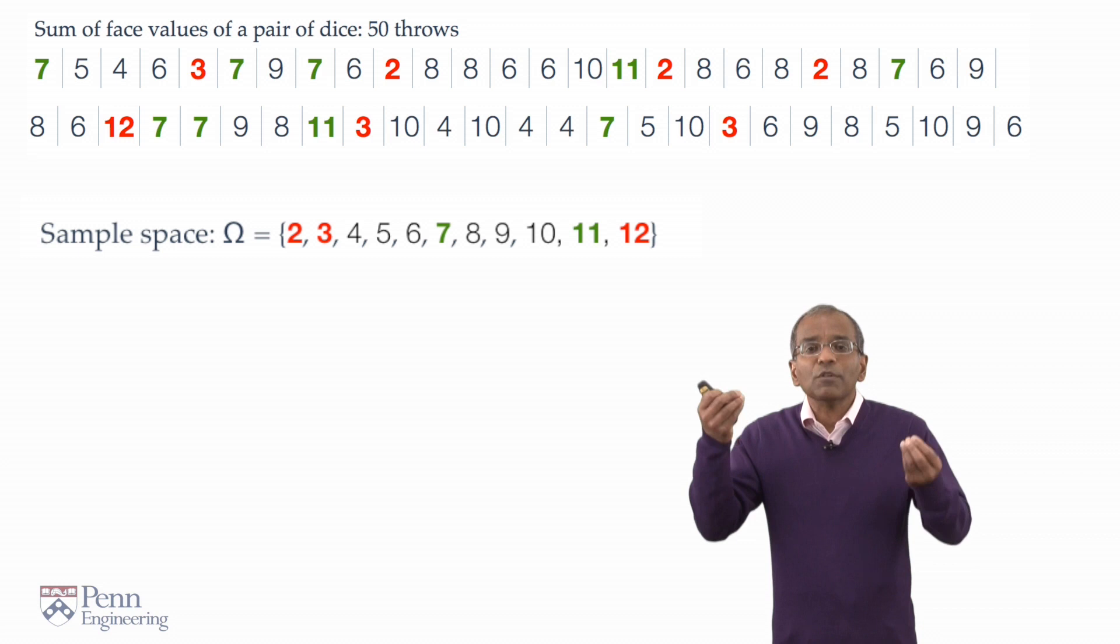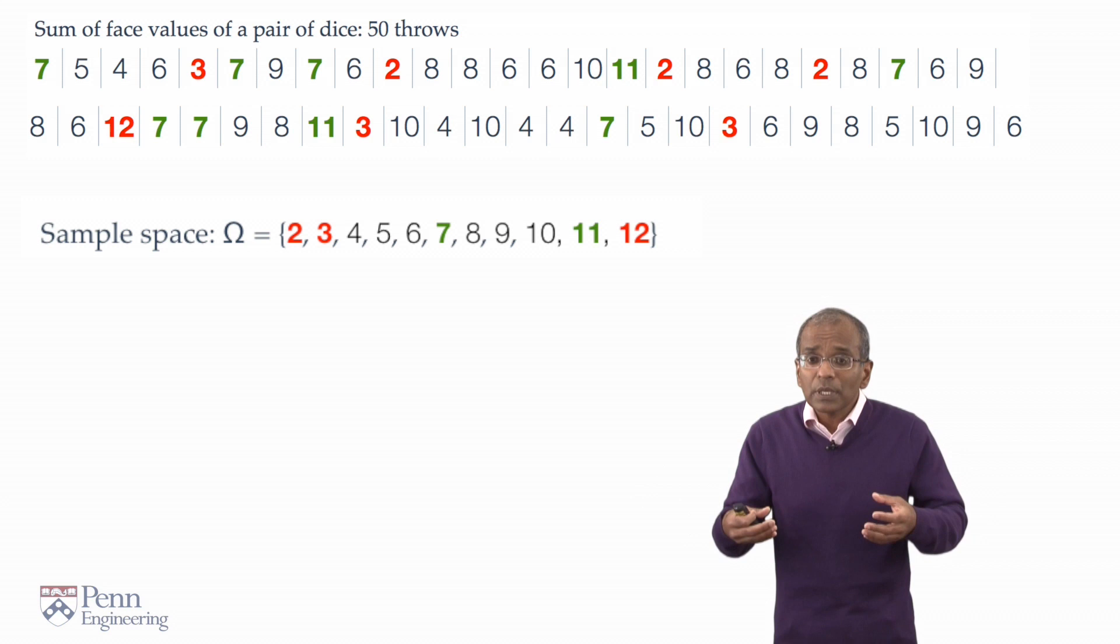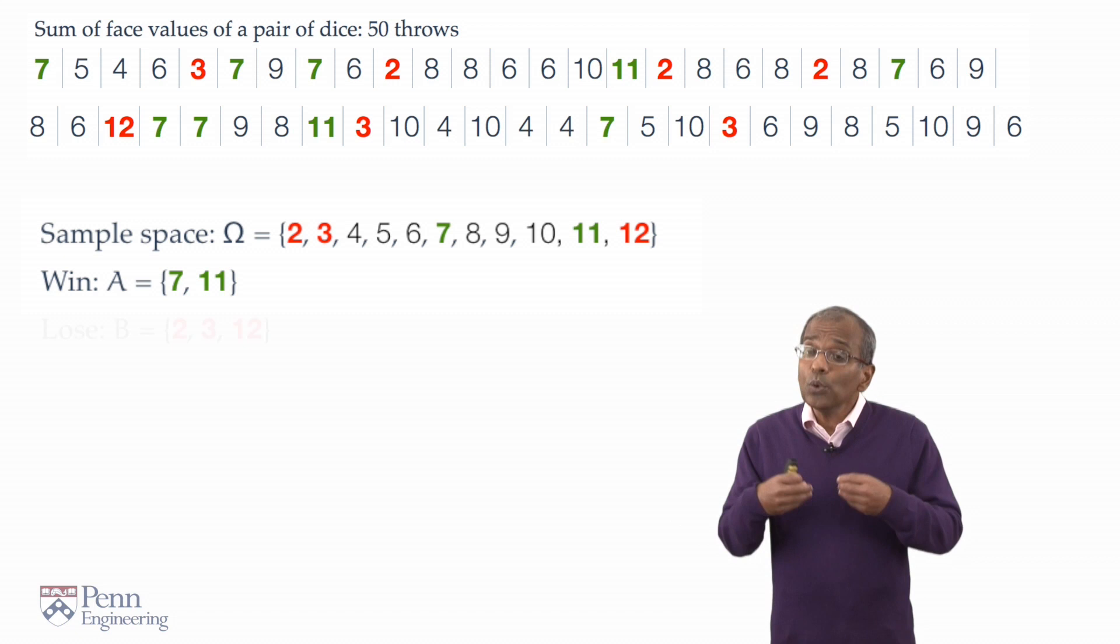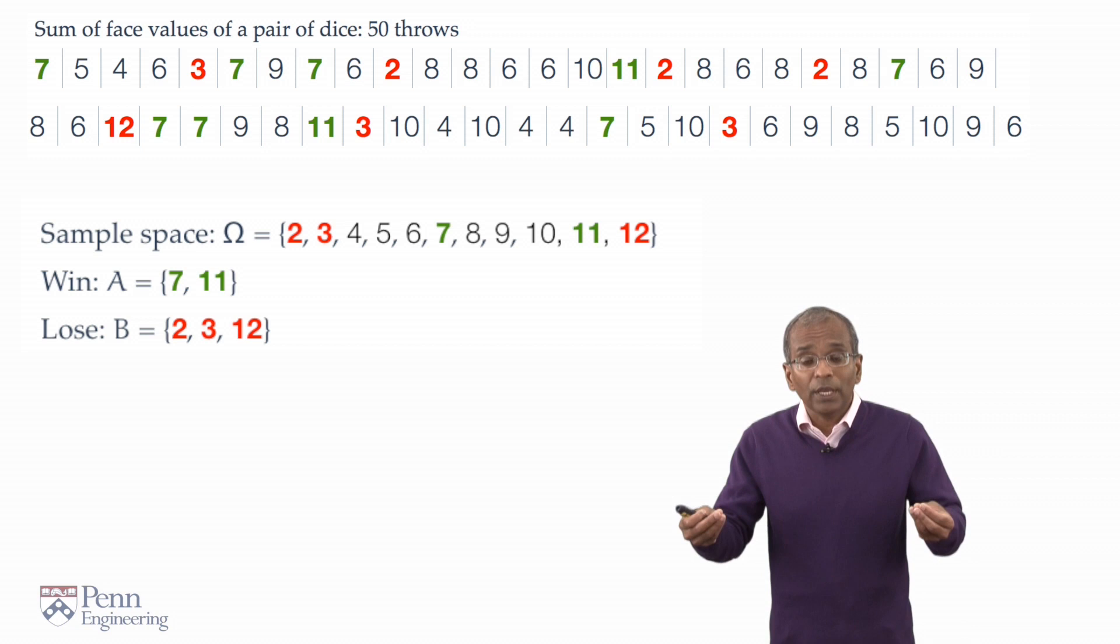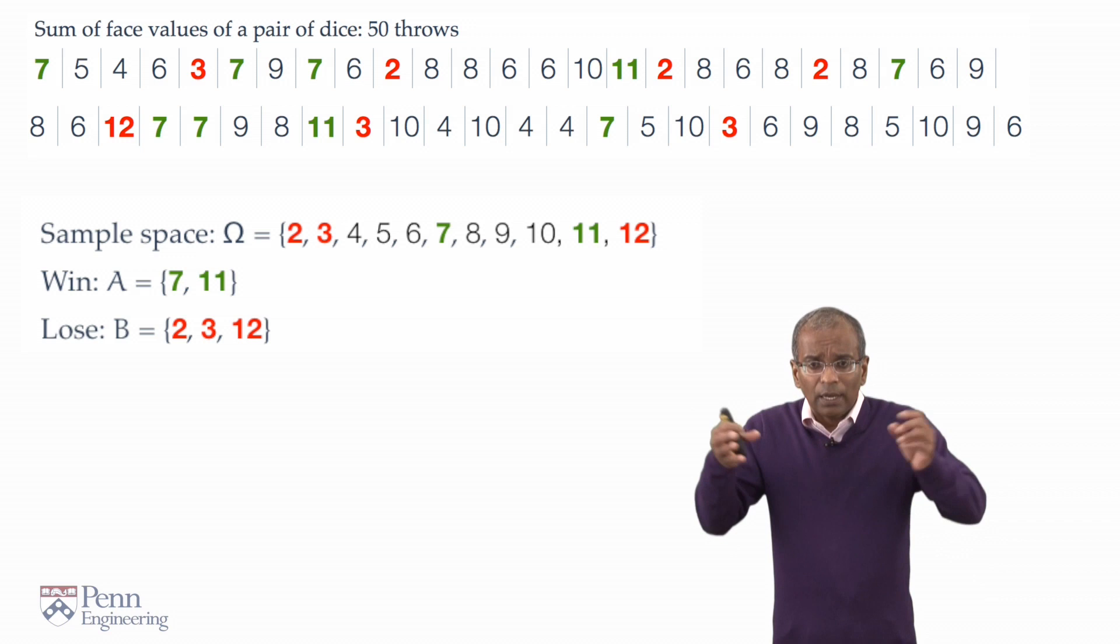Now, in the game of craps, the first throw can be decisive in one of two ways. One could win on the first throw. A win on the first throw means that one throws either a 7 or an 11. Or one could lose on the first throw, which means that one throws a 2 or a 3 or a 12. I have tagged these in color to make them visually clearer on the screen.